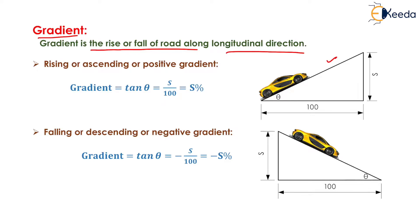Rising gradient is shown here when there is a positive slope. It is known as positive gradient or rising gradient, and it will be equal to tan θ = S/100, so gradient will be equal to S percent. Similarly, for falling or descending or negative gradient, tan θ = −S/100, which equals −S percent, so the gradient is negative in the falling or descending gradient.